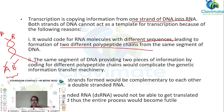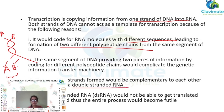The same segment of DNA providing two pieces of information by coding for different polypeptide chains would complicate the genetic information. Strand A would produce one polypeptide and strand B would produce another from the same DNA molecule, bringing complications. Furthermore, the two RNA transcripts would be complementary to each other, resulting in a double-stranded RNA, which would not be able to be translated into proteins, making the entire process futile.